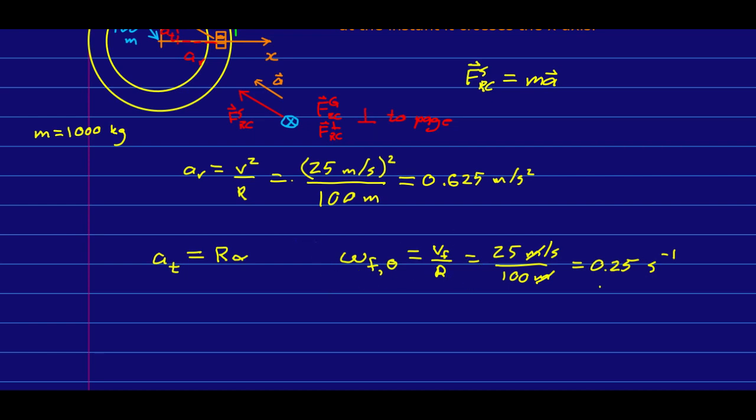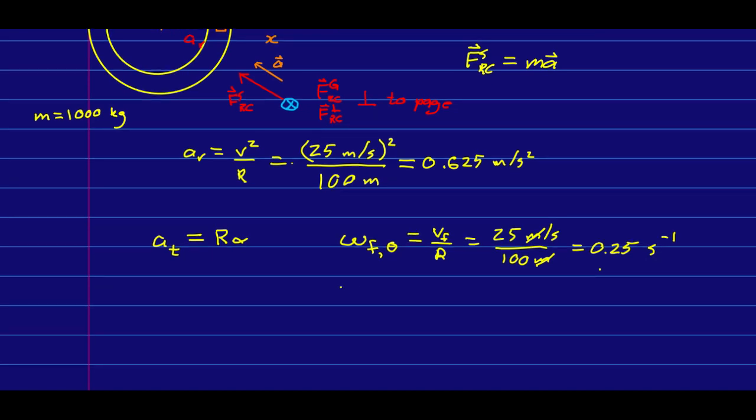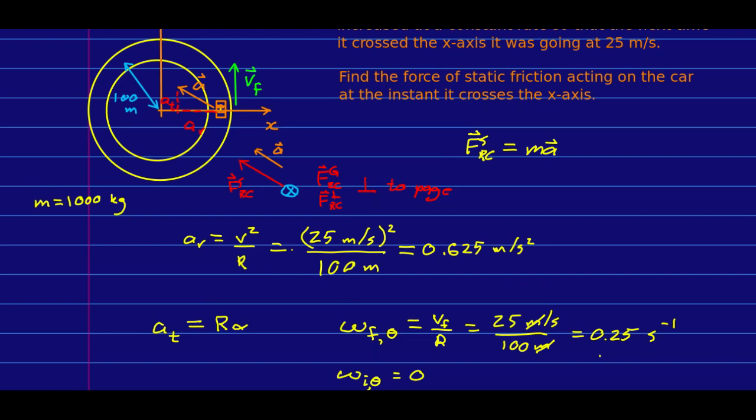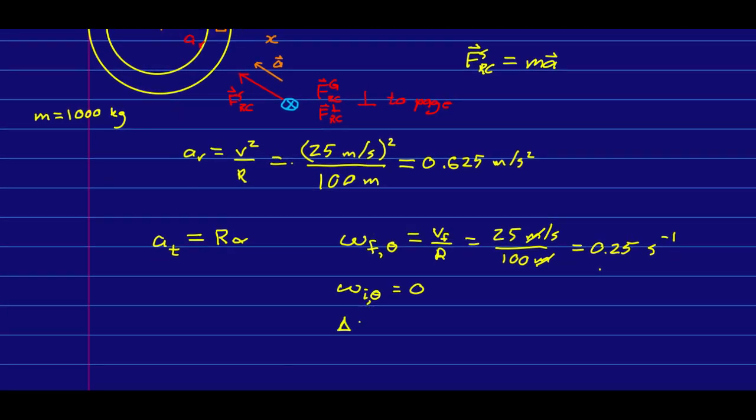And we know that the initial angular velocity was zero. And we know that our delta theta was a full circle. Well, I hope you know that there are two pi radians in a circle. If not, you can just note that the arc length is r theta. And so if the arc length is the full circumference, which is two pi r, then that's r theta. And so that tells you that there are two pi radians in a circle.